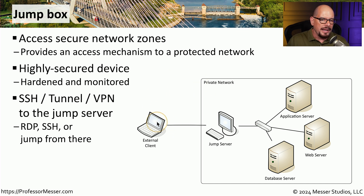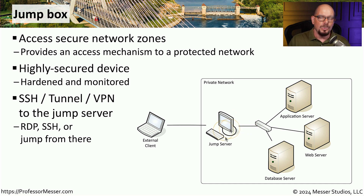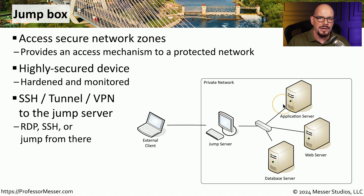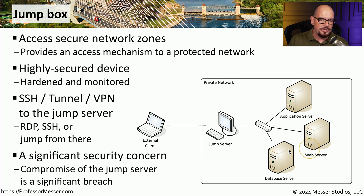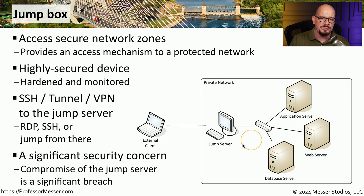From our external client, we would use some type of third-party software — VPN, SSH, or some other secure mechanism — to gain access to the jump server. Once on the jump server, we can connect to all of the other devices within that organization without having to set up separate connections for each individual device. We need to be sure that the jump server is always kept up to date with security patches and that we provide a high level of authentication to prevent any third parties from gaining access to the inside of this private network.